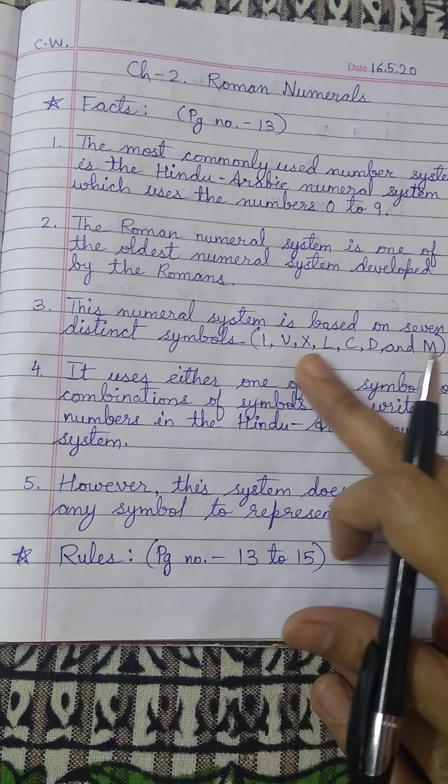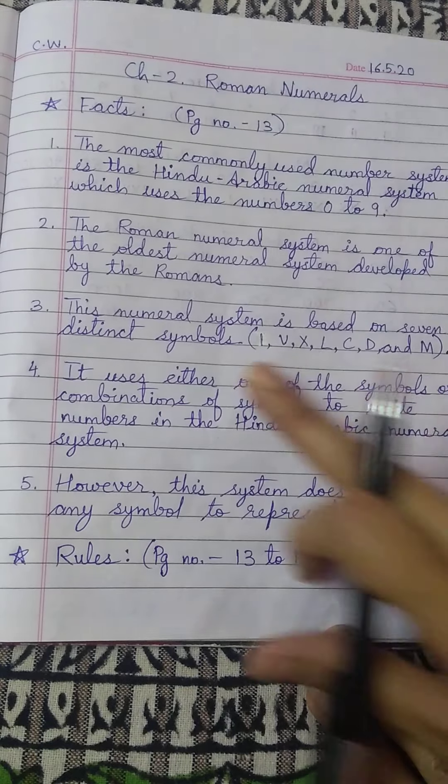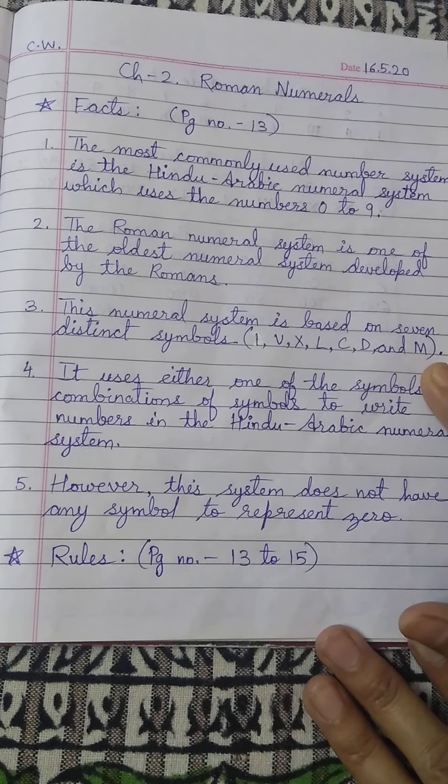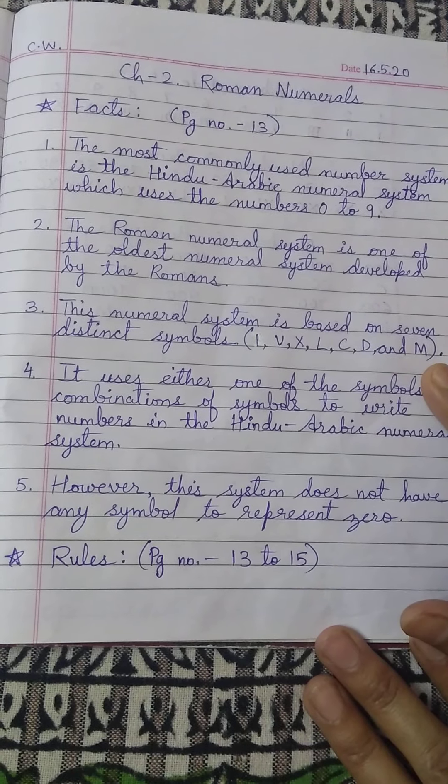I, V, X, L, C, D and M. Only 7 symbols are there in roman numerals and they have different values as well.